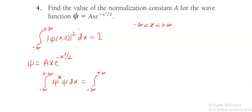So psi star is the complex conjugate of psi. Here we have A x e to the power minus x square by 2, into A x e to the power minus x square by 2.